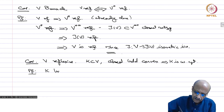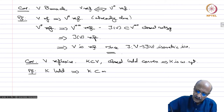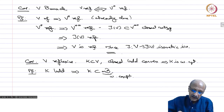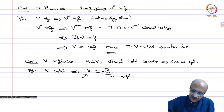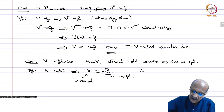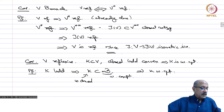Proof: K is bounded, so K is contained in some M times the unit ball. M times the unit ball is weakly compact because it is just a scaling of the unit ball and V is reflexive. K is a closed convex set, so it is weakly closed. A closed subset of a compact set in a Hausdorff space is compact, therefore K is weakly compact. That proves the result.